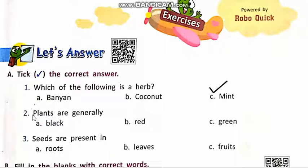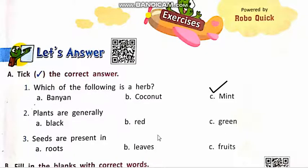Number 2. Plants are generally. Option A. Black. B. Red. C. Green. Plants kis color ke hote hain? Black hote hain, red hote hain ya green hote hain? The answer is C.